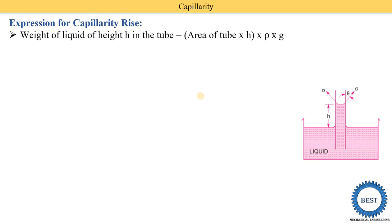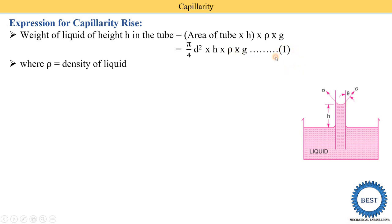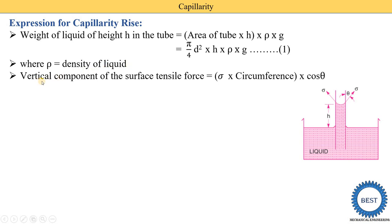We write down the equation for the weight of liquid of height h in the tube. Weight equals volume times rho times g. Volume is the area of the tube times h. The area of the circular tube is pi by 4 times d squared. So the weight equals pi by 4 times d squared times h times rho times g. This is equation number one, where rho is the density of the liquid.